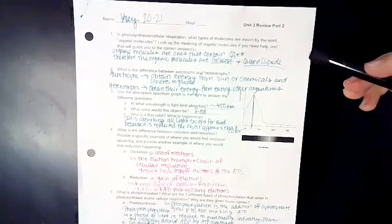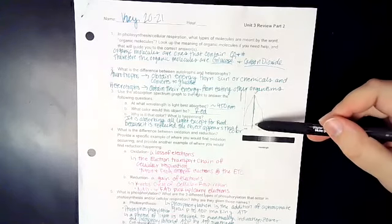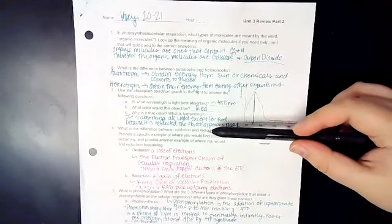Number three, the absorption spectrum graph to the right answers the question. Use it to answer the question. So at what wavelength is the light best absorbed? So if we draw a line at our peak, that's around 450. What color would that be?